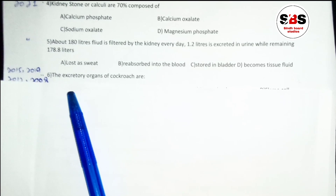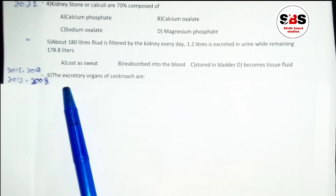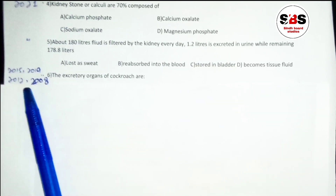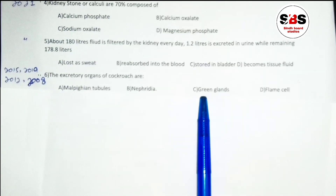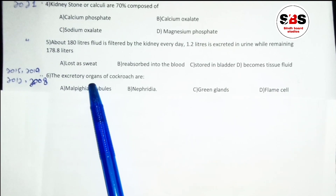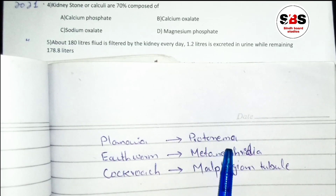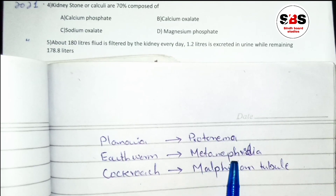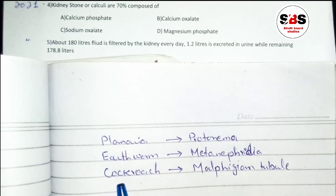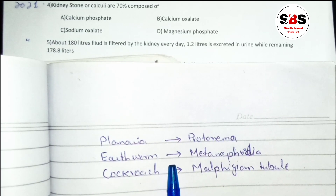Question number 6: the excretory organs of cockroach are called what? This MCQ is very important and has appeared in 2019, 2015, 2012, and 2008. Options are: option A — Malpighian tubules, option B — nephridia, option C — green glands, option D — flame cells. Remember: planaria uses protonephridia, earthworm uses metanephridia (nephridia), and cockroach uses Malpighian tubules. The correct answer is Malpighian tubules.